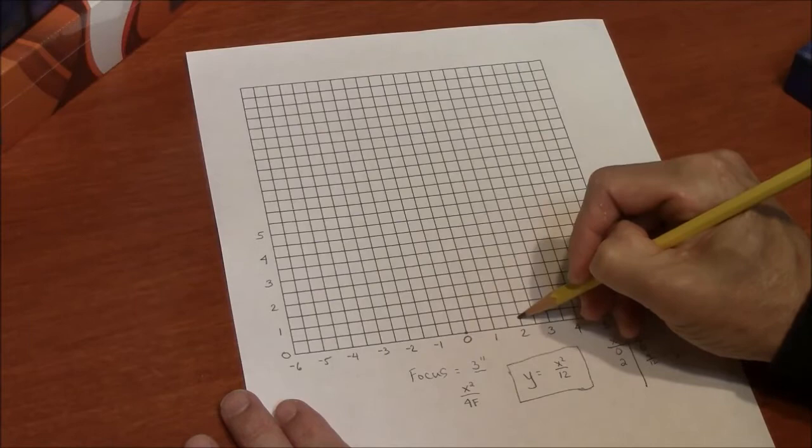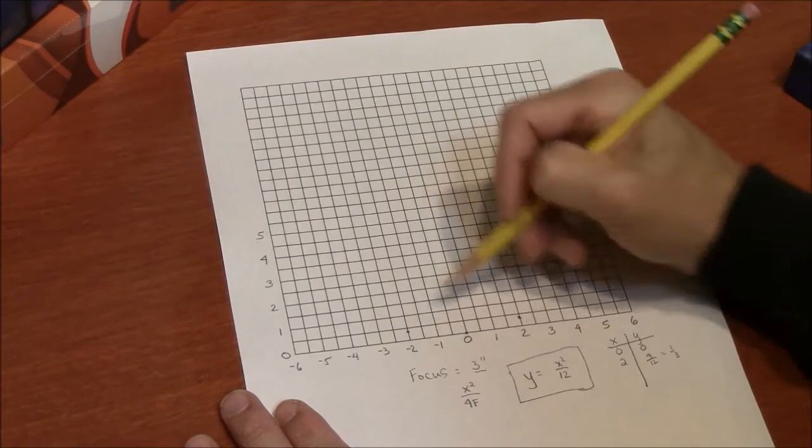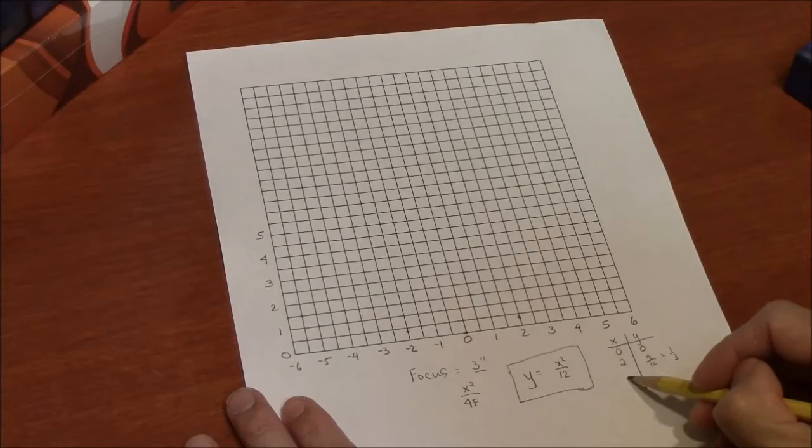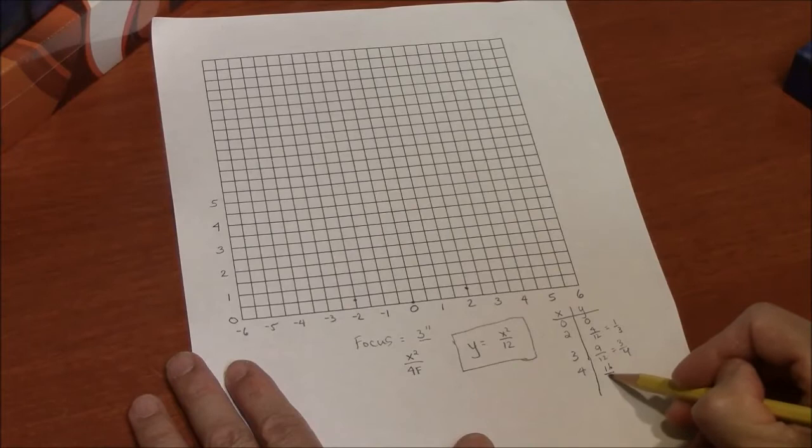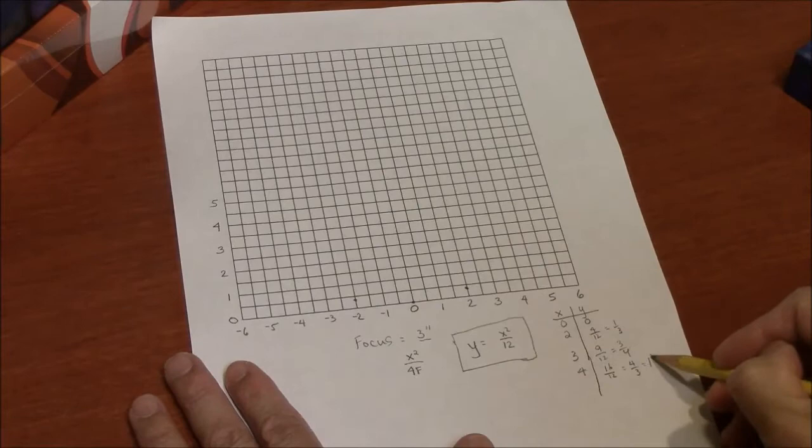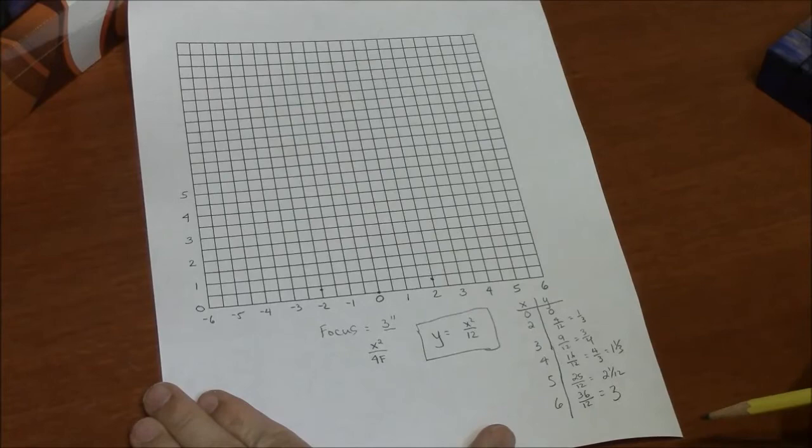And the same is true in the negative direction. It's symmetric about this zero point here. What if I go to x equals 3? Now I've got 9 over 12, which is 3 quarters. If x equals 4, now I've got 16 over 12. That's 4 thirds. That's 1 and 1 third if you like that better.